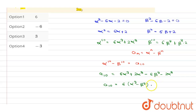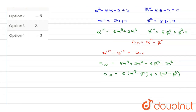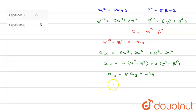Taking 6 common from the first pair and 2 common from the second pair, we get: a10 equals 6·(alpha to the power 9 minus beta to the power 9) plus 2·(alpha to the power 8 minus beta to the power 8). Recognizing these as a9 and a8 respectively, we conclude: a10 equals 6·a9 plus 2·a8.